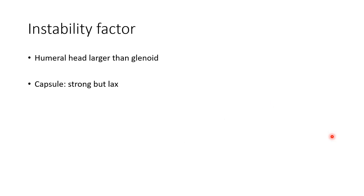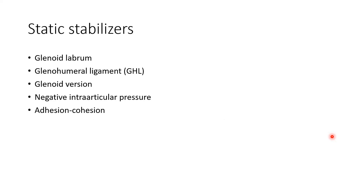Regarding instability factors: basically the humeral head is larger than the glenoid, and the capsule is strong but also lax. The static stabilizers are the glenoid labrum, glenohumeral ligament, glenoid version, negative intra-articular pressure, and adhesion cohesion.